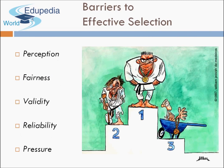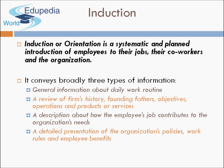There are certain barriers to effective selection. Biasness can be involved — if the test is not reliable or valid, the selection procedure gets affected. Every organization should ensure that the barriers to the selection procedure are minimized.